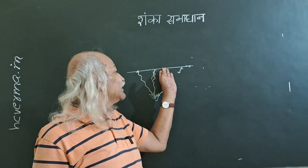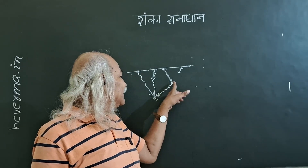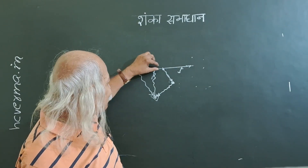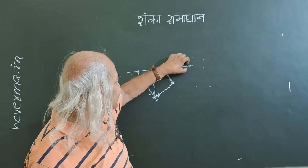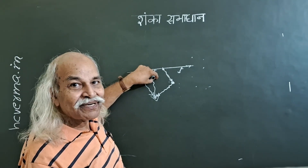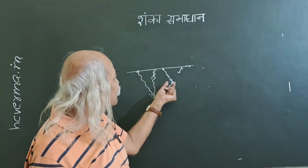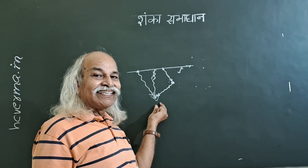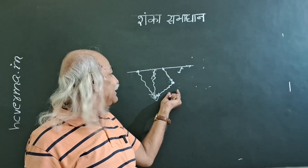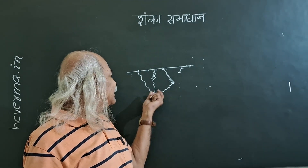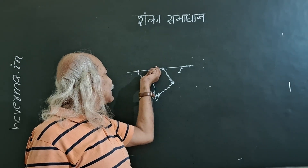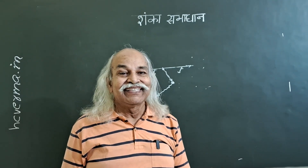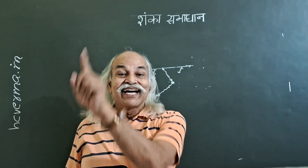When light scatters here, not everything gets scattered — most of it goes ahead and only a small part goes in some other direction. Similarly at the second particle, only a very small part of this — which is already very small — will come to the eye. So I will not be able to see that second particle. I will only see the particles from which light comes directly to the eye in one step. That is why we see only the beam path and not the doubly-scattered path.